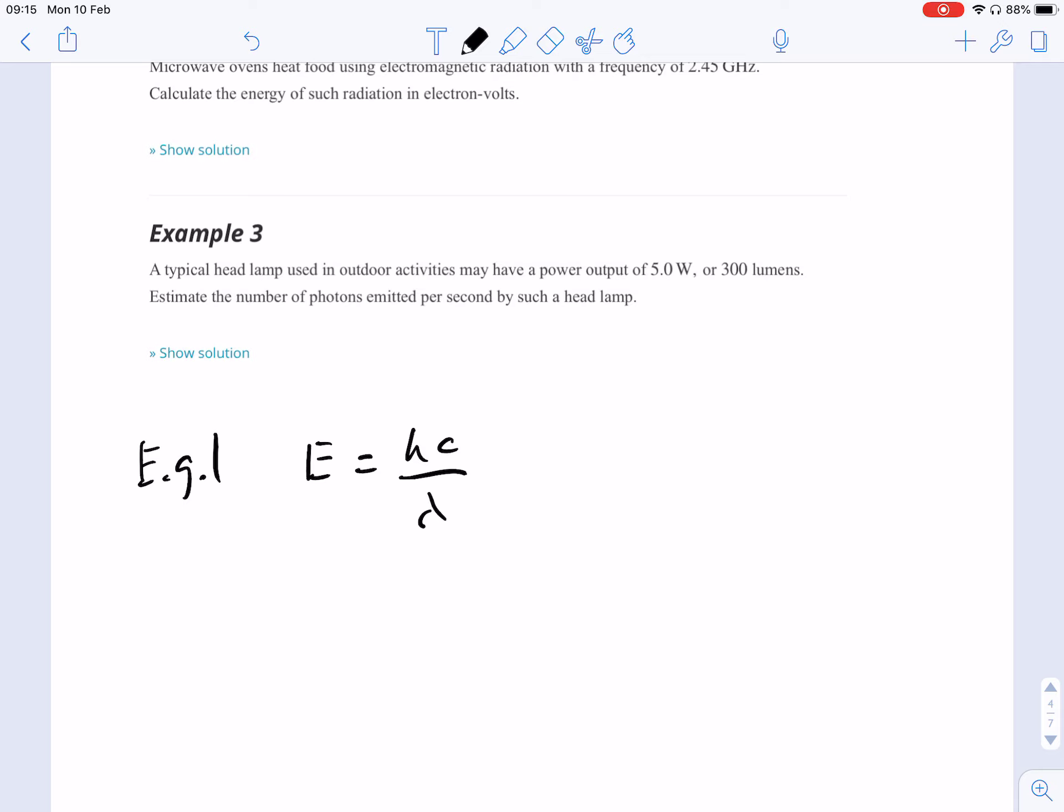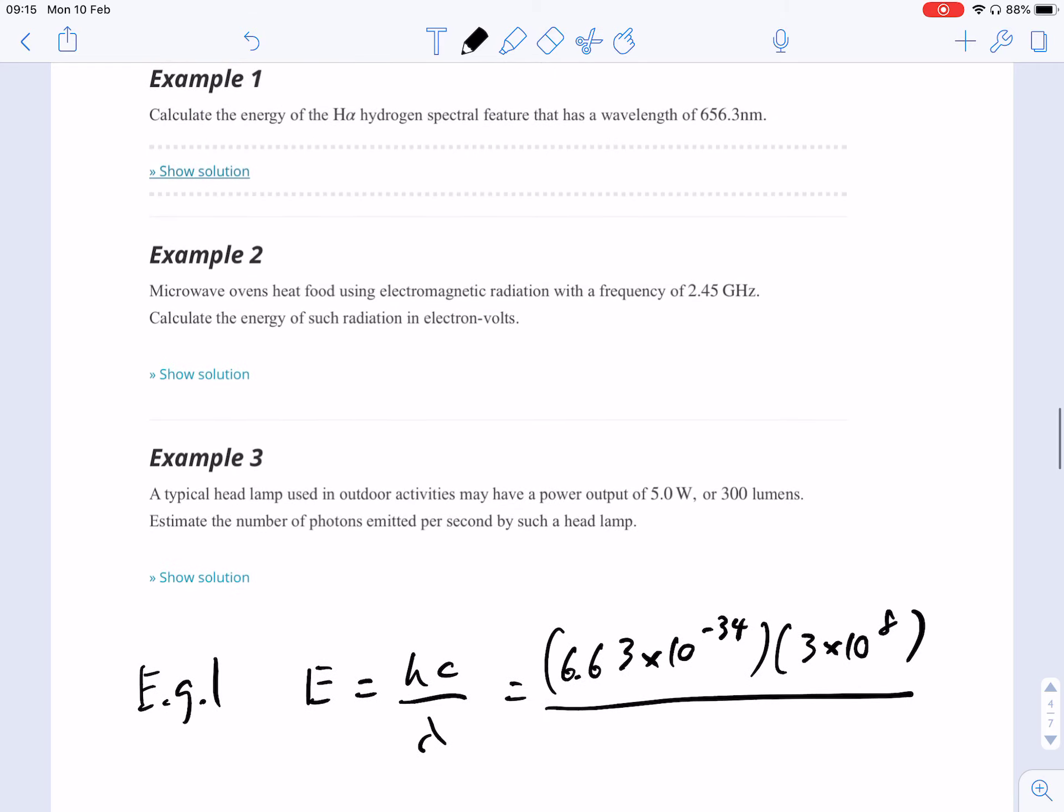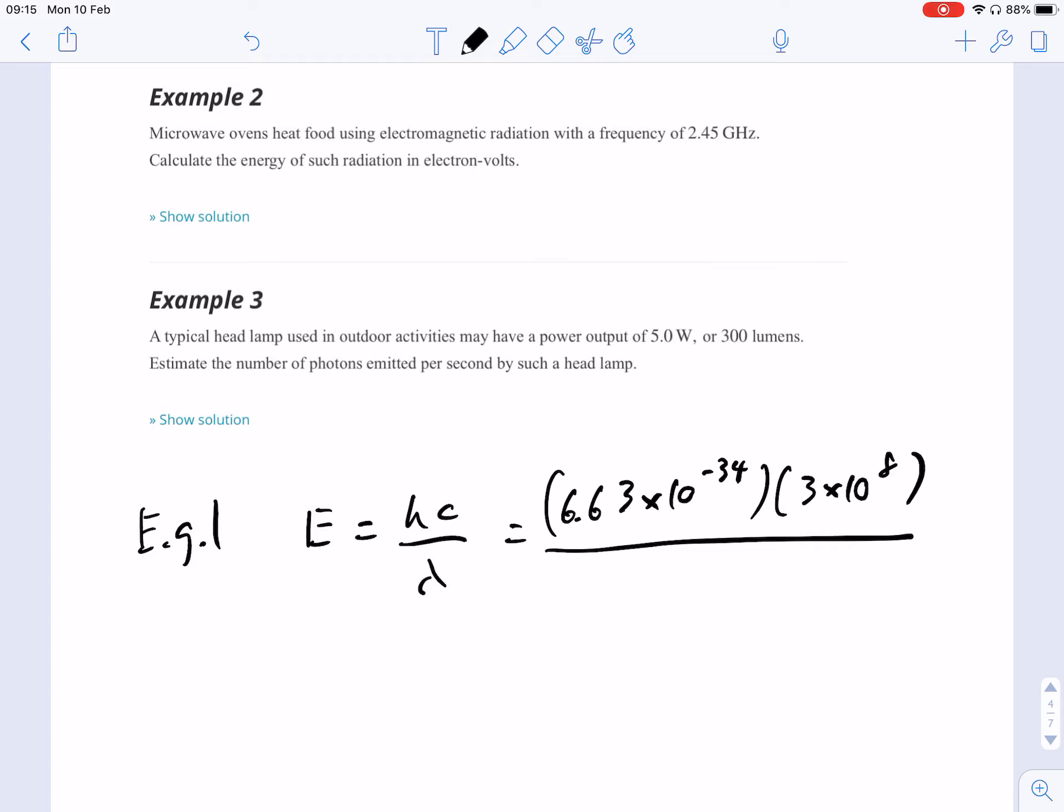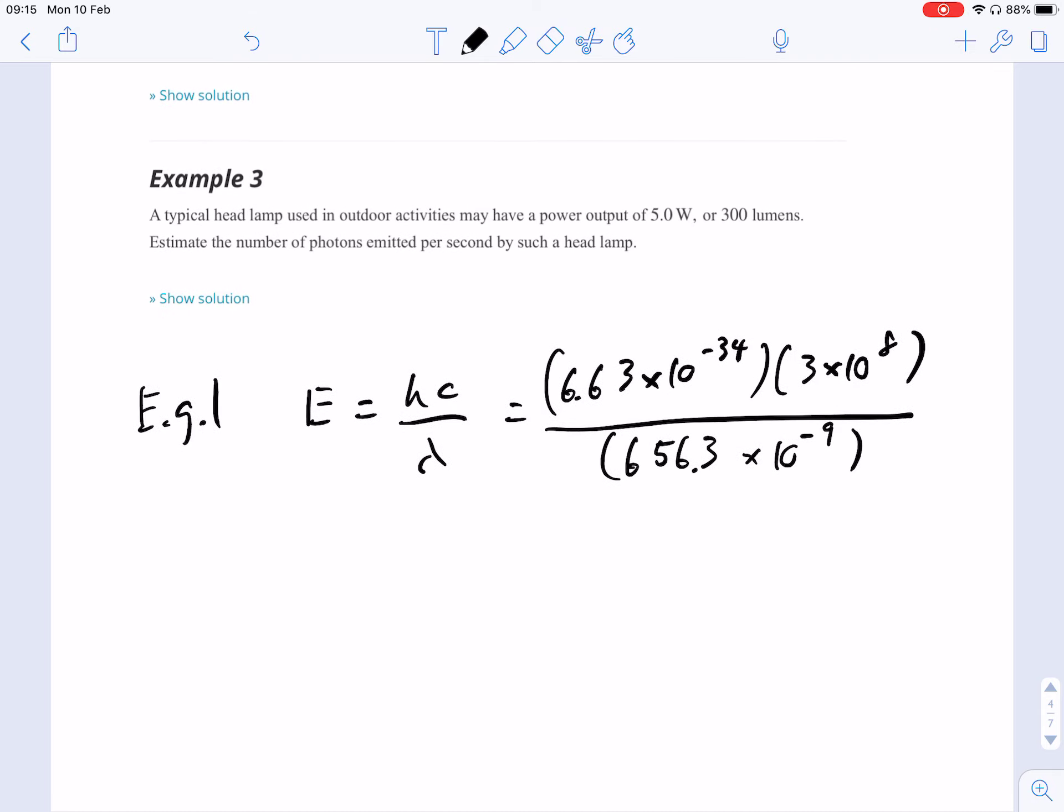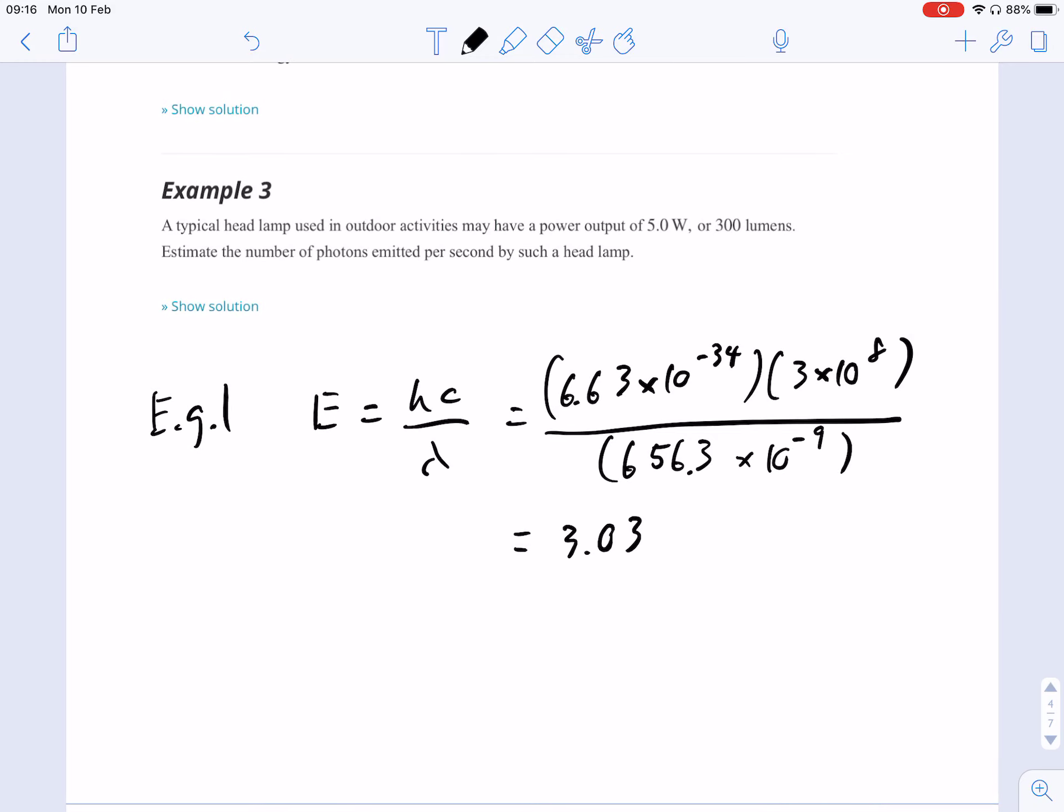So we're going to have to find Planck's constant, which I'm going to look up right now. So Planck's constant is, this is just a straight substitution. So Planck's constant is 6.63 times 10 to the power of negative 34. I'm going to skip the units just for the sake of space conservation. Speed of light, 3 times 10 to the power of 8. And then our wavelength is 656.3 nanometers. 656.3 nanometers. Nanometers is 10 to the power of negative 9.